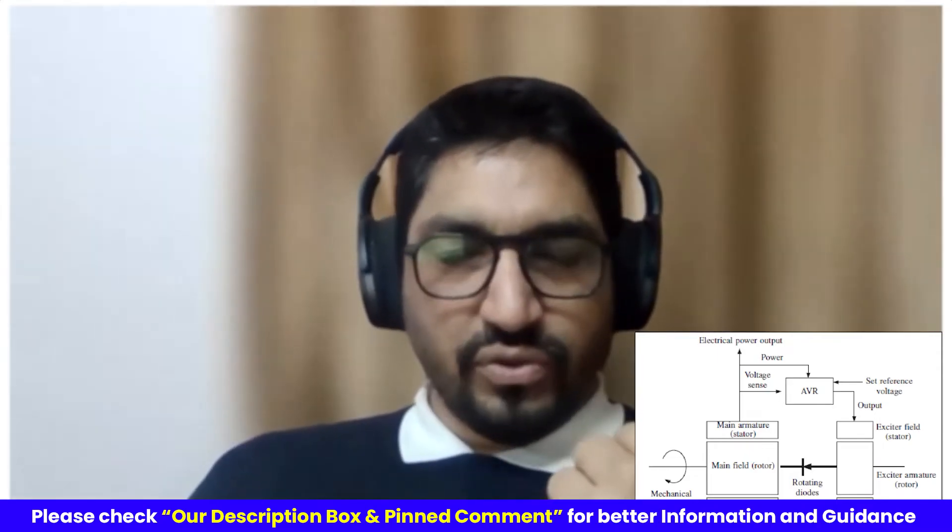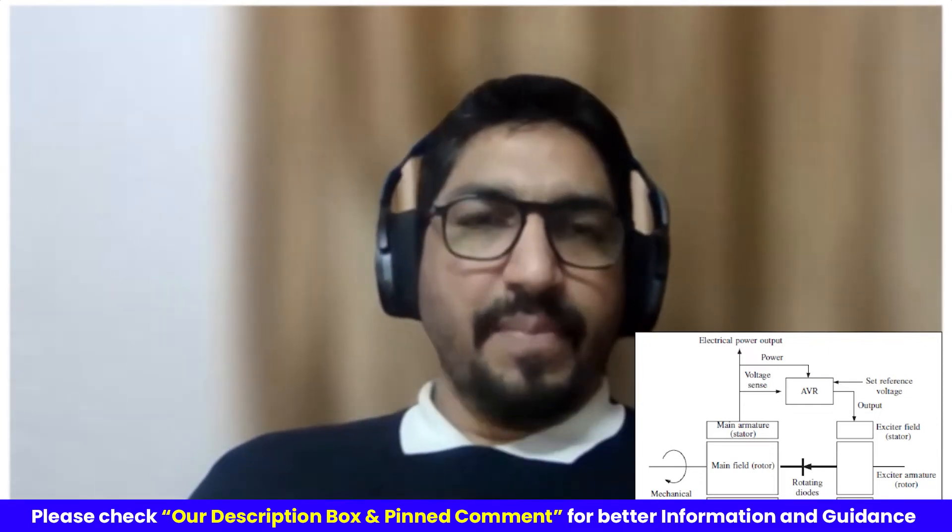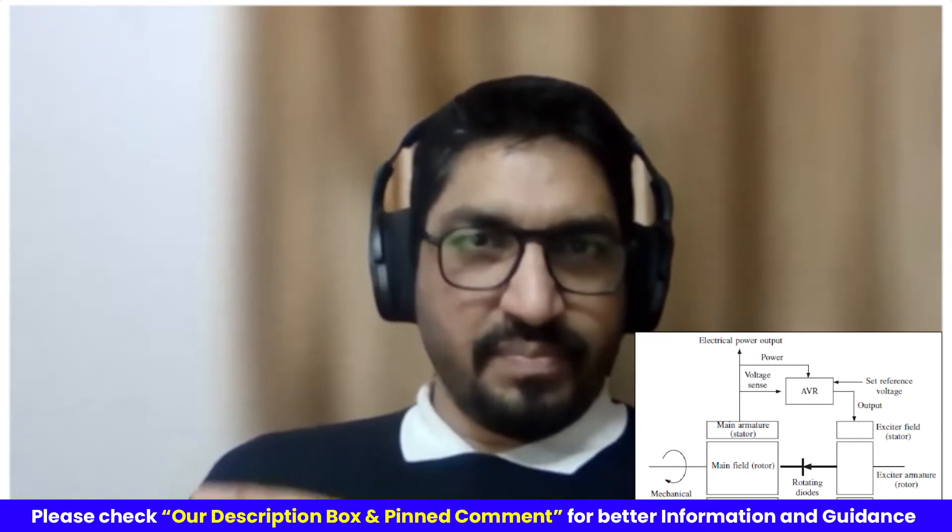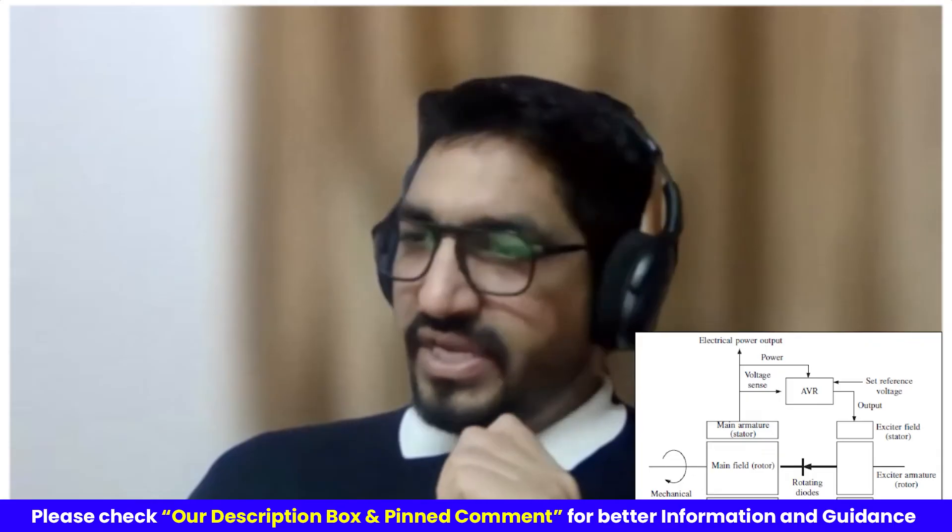Based on this DC power, or DC current value, that exciter is controlling the DC to the main rotor, main section, main generator. And this DC will further control the output. This is how the chain reaction will happen.